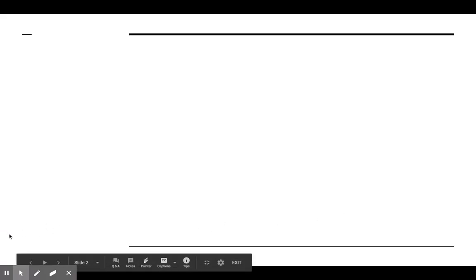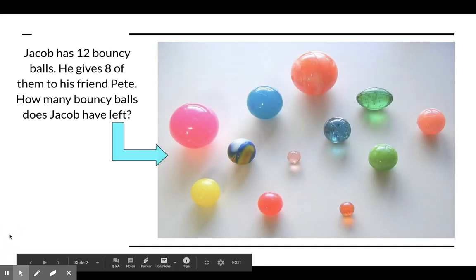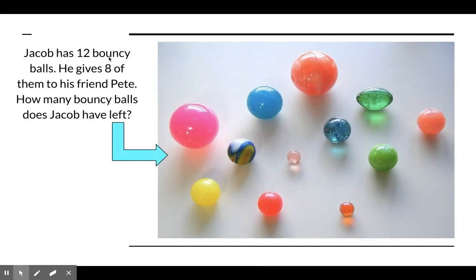Let's look at a story problem today. It says, Jacob has 12 bouncy balls. He gives 8 of them to his friend Pete. How many bouncy balls does Jacob have left?